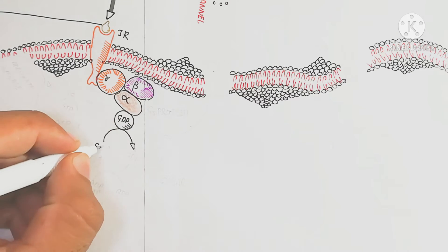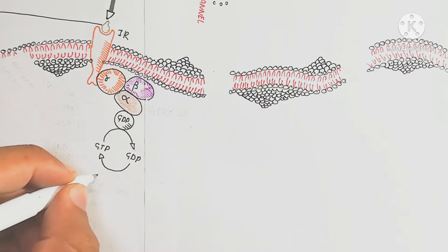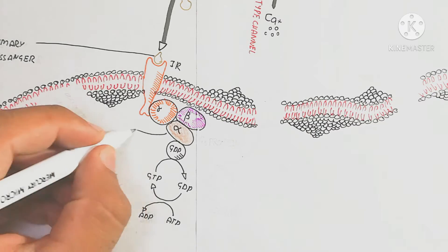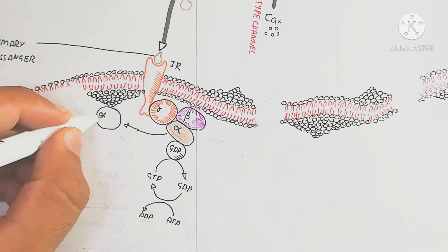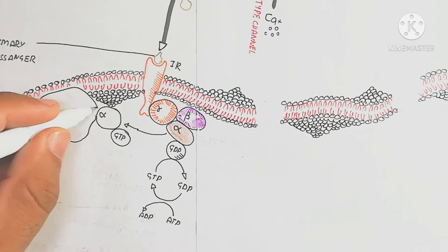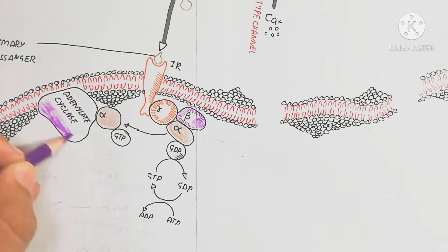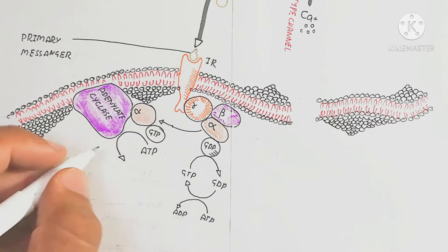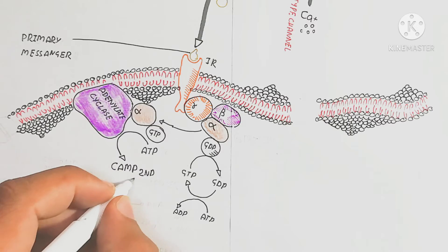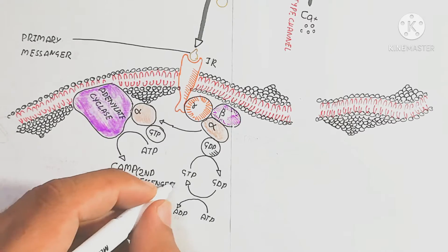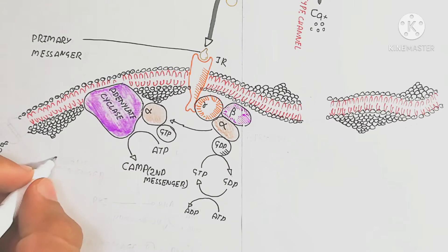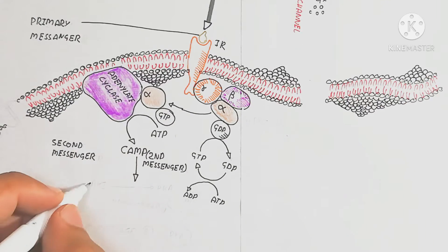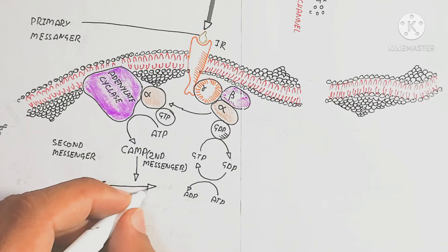The alpha subunit of the G protein contains GDP — guanosine diphosphate. This alpha subunit is stimulated by GTP, converting GDP to GTP from ATP. The alpha subunit then separates and goes to the adenylate cyclase enzyme embedded in the plasma membrane. Adenylate cyclase converts ATP to cyclic AMP, releasing two phosphate groups. This cyclic AMP is the second messenger; ATP comes from the mitochondria.